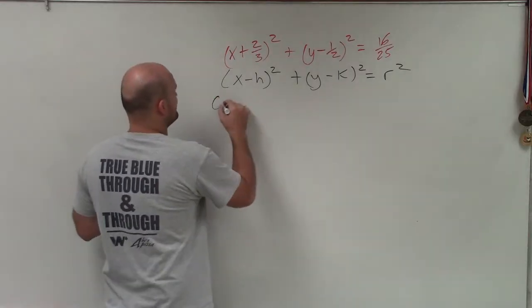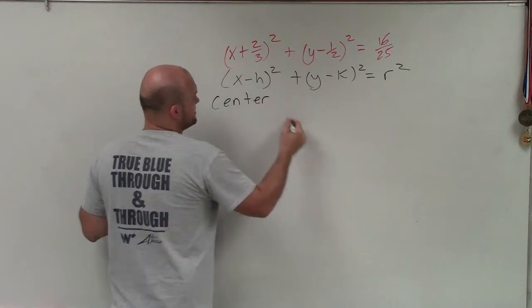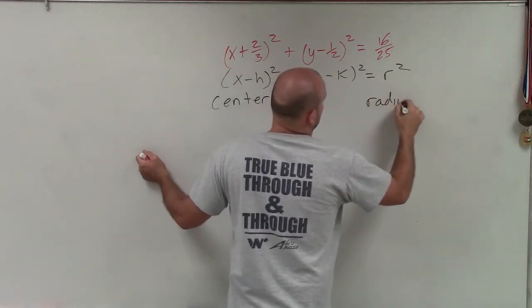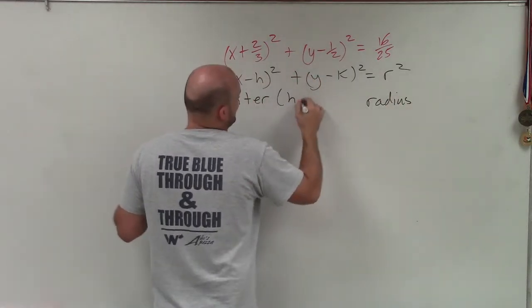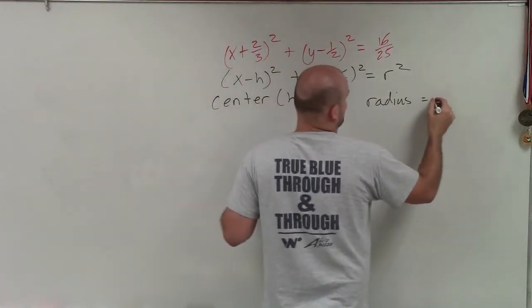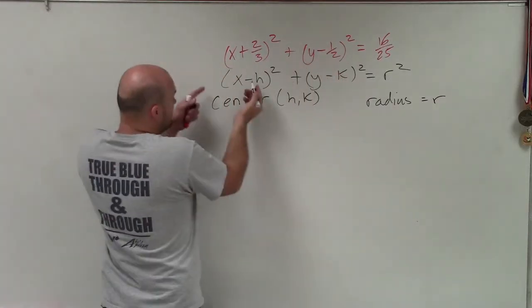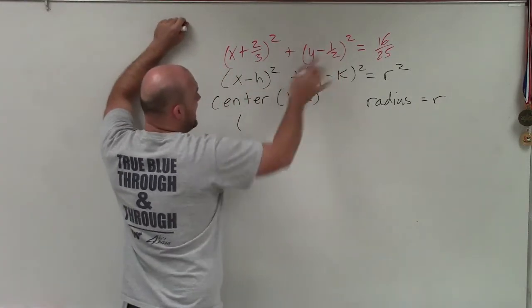So now, all I need to simply do is just determine, well, what is my center and what is my radius? So the center is h comma k and the radius is r. So in here, you can see that my center is, remember, it's the opposite.